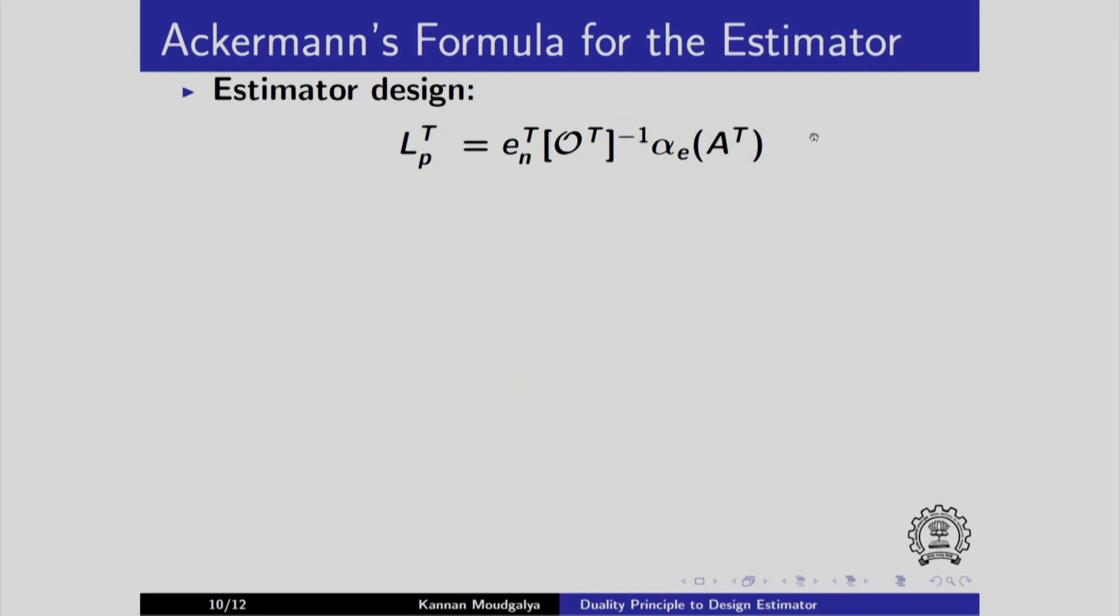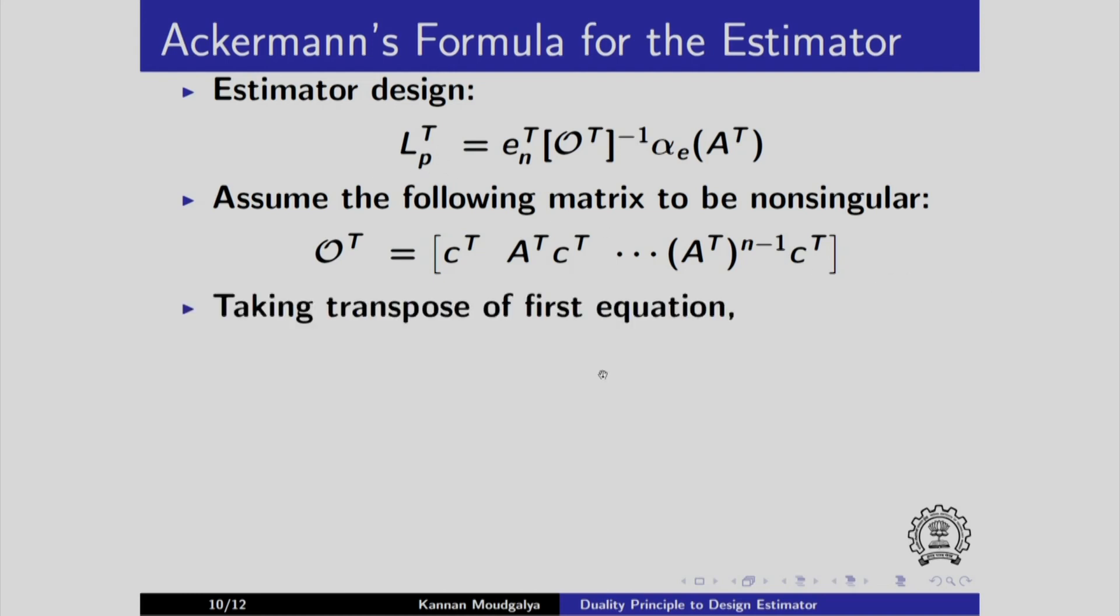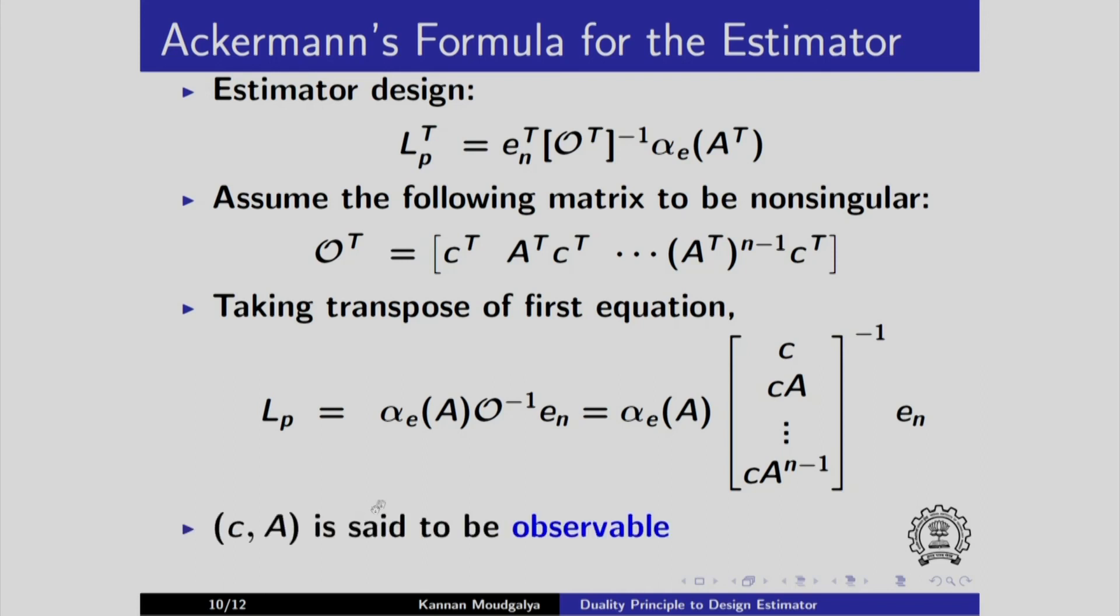This is the formula we derived in the previous slide. We will assume as before that this matrix is non-singular, so that we can evaluate this Lp t. Let us take the transpose of the first equation. I get Lp here. Then alpha E of A t transpose of the whole thing, it becomes alpha E of A. Then this transpose goes away. You have to verify this, convince yourself that you will indeed get this if you take a transpose. Then E n. Now what is O? It is the transpose of this. Let us take the transpose of this and find the inverse. Here is the transpose of O and this E n.